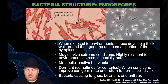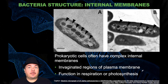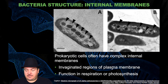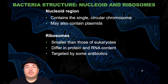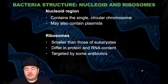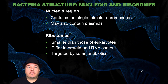Examples of bacteria that can form endospores include ones that cause tetanus, botulism, and anthrax. Some bacteria also have internal membranes. They don't have membrane-bound organelles, but the plasma membrane can invaginate or fold in, creating membranes inside the cell that can be used for metabolic functions like cellular respiration or photosynthesis. Bacteria also have a nucleoid — the region where their chromosome is located — which can also contain plasmids. They also have ribosomes, which are smaller than eukaryotic ribosomes and differ in their proteins and rRNA. Because bacterial ribosomes differ from ours, they can be targeted by antibiotics to kill bacteria without harming eukaryotic cells.